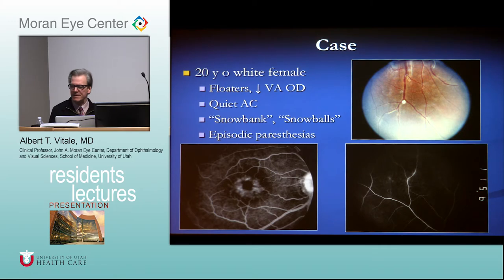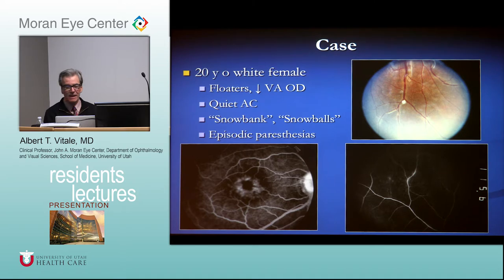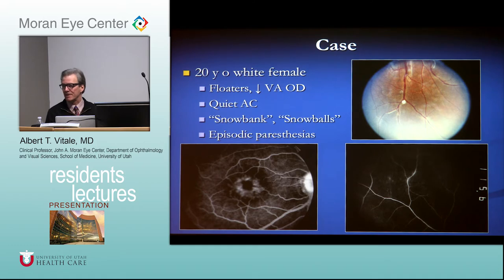A 20-year-old white female with floaters, decreased vision, snowballs, and episodic paresthesias — this is a patient with intermediate uveitis. The designation 'intermediate uveitis' is used until proven otherwise idiopathic. When associated with systemic conditions, it's referred to as 'intermediate uveitis associated with X.' If not associated with any systemic disease, the idiopathic condition is known as pars planitis.